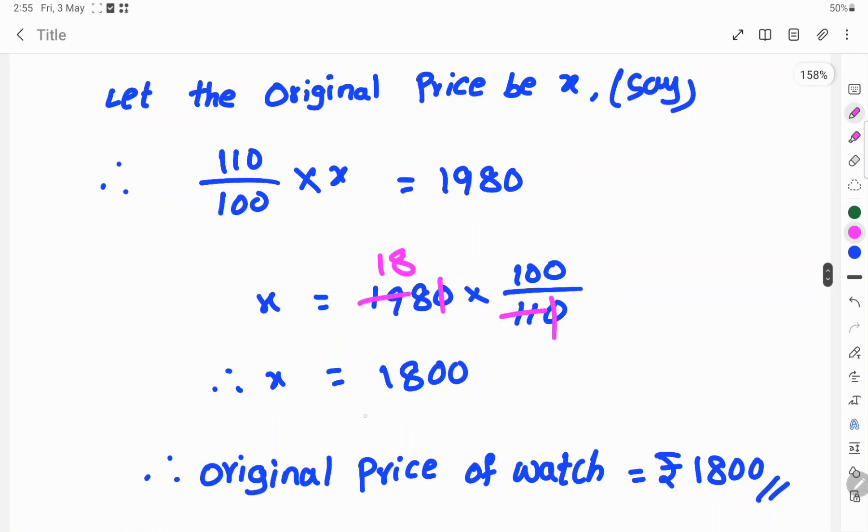So X equals Rs. 1800. Therefore, original price of watch is Rs. 1800. This is the solution.